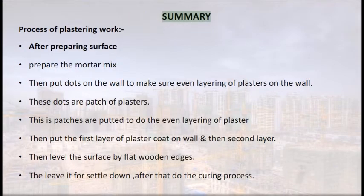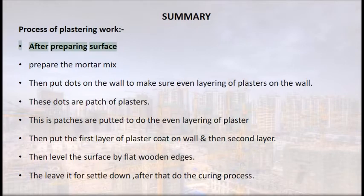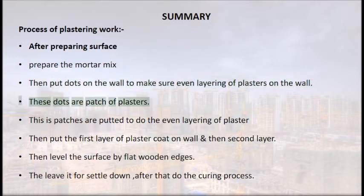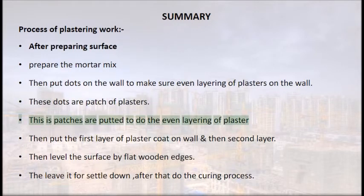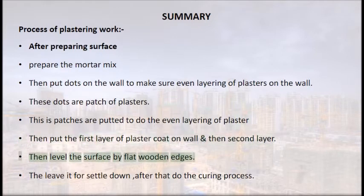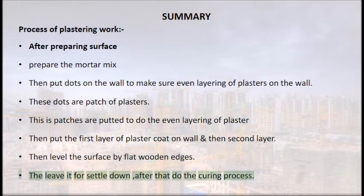Summary — process of plastering work: after preparing the surface, prepare the mortar mix. Put dots on the wall to ensure even layering of plaster — these dots are patches of plaster to ensure uniform layering. Then put the first layer of plaster coat on the wall, followed by the second layer. Level the surface with flat wooden edges, then leave it to settle down and carry out the curing process.